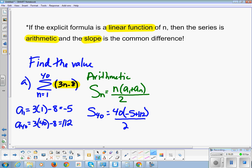And then, it's just a calculator chug from there. Negative 5 plus 112 is 107. And, then, you times that by 40, and then divide by 2, and you get 2,140. And, that's the answer.